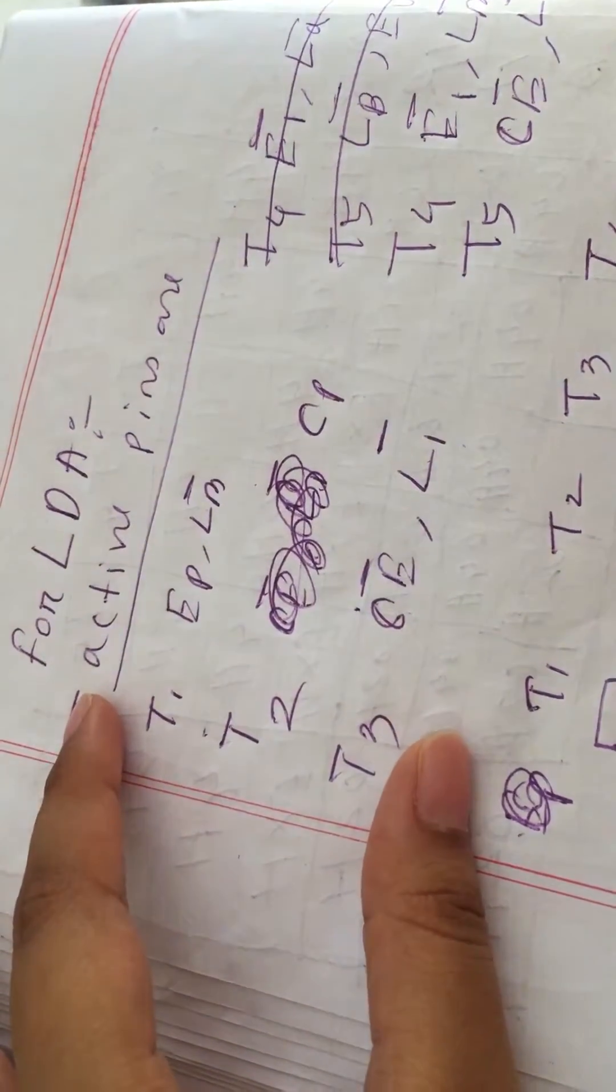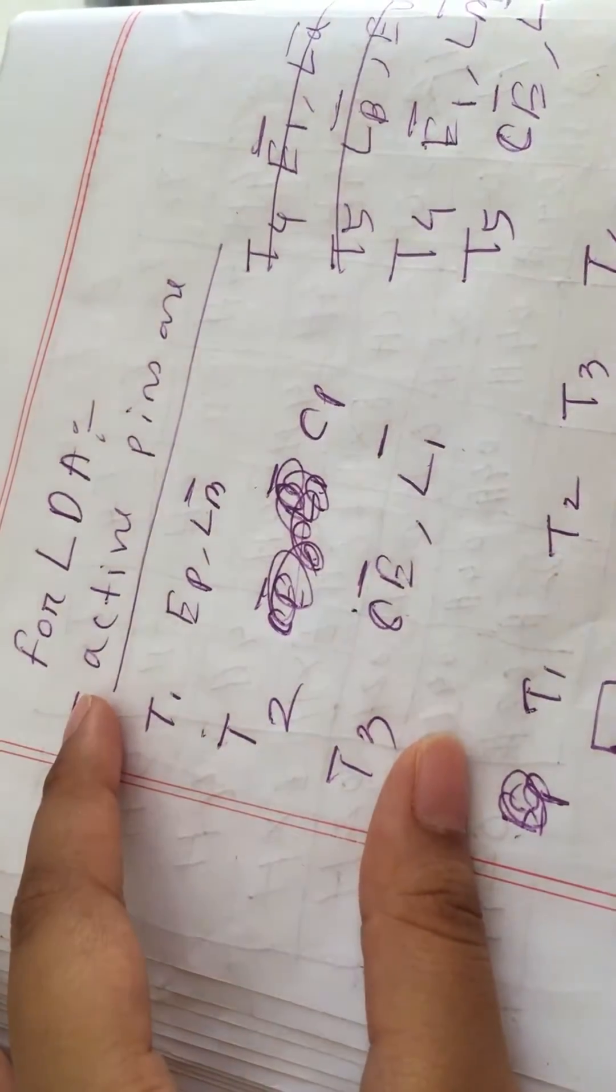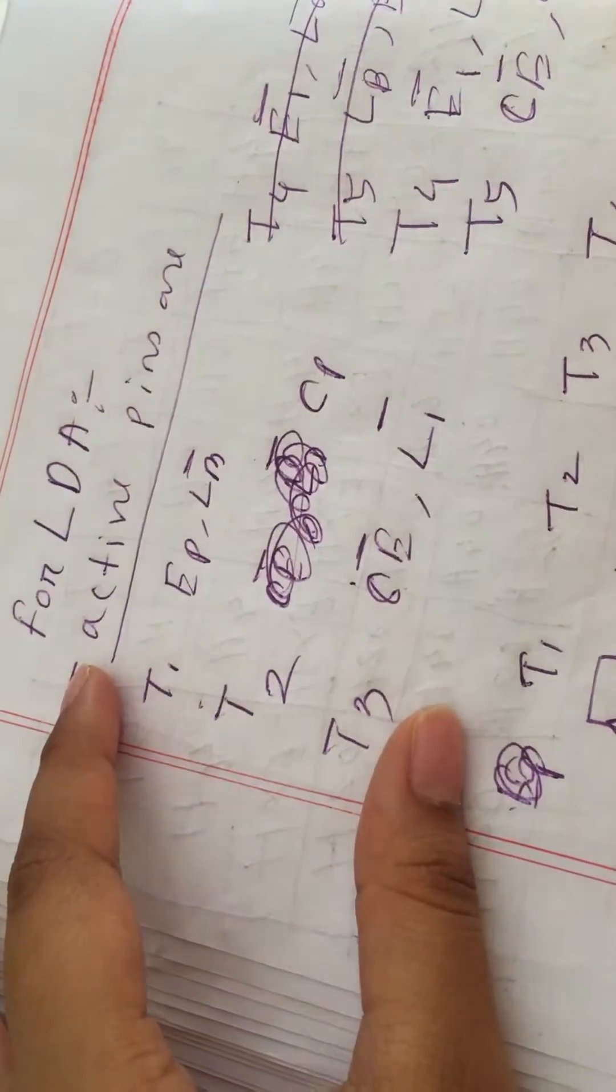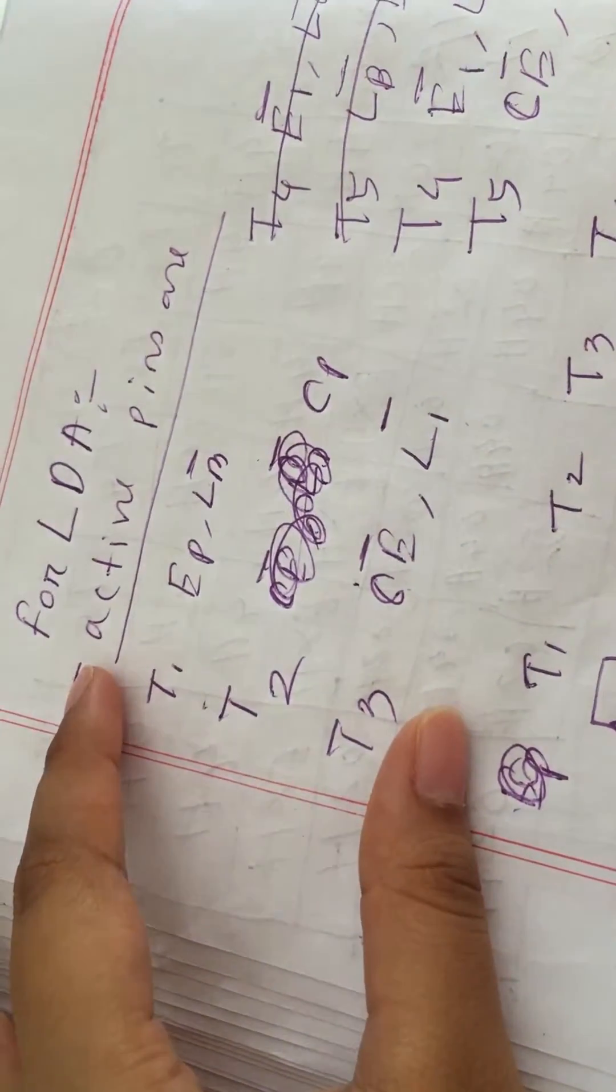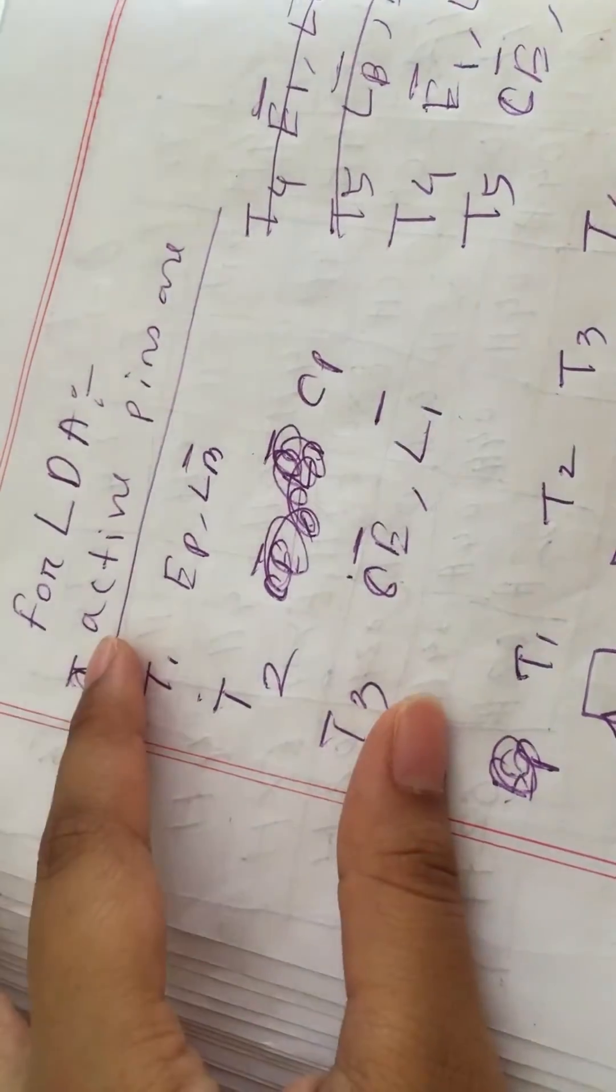So this T1, T2, T3 cycles actually come from the fetch cycle and this will be in every instruction like load, add, subtraction, out, halt. This will be copied, okay?